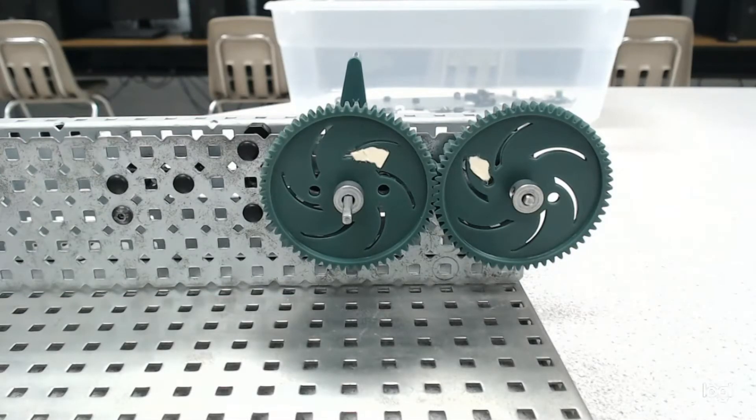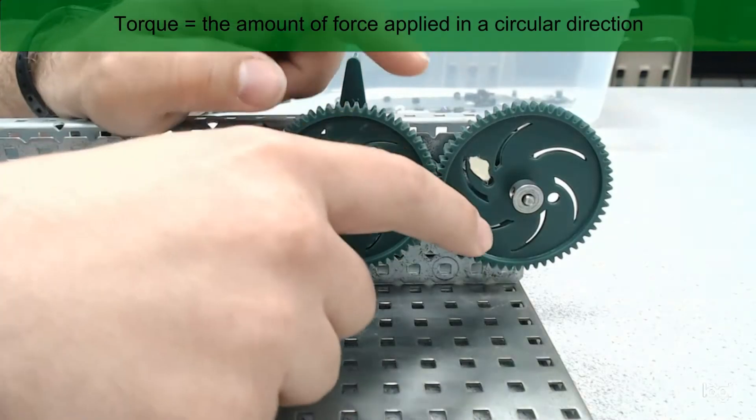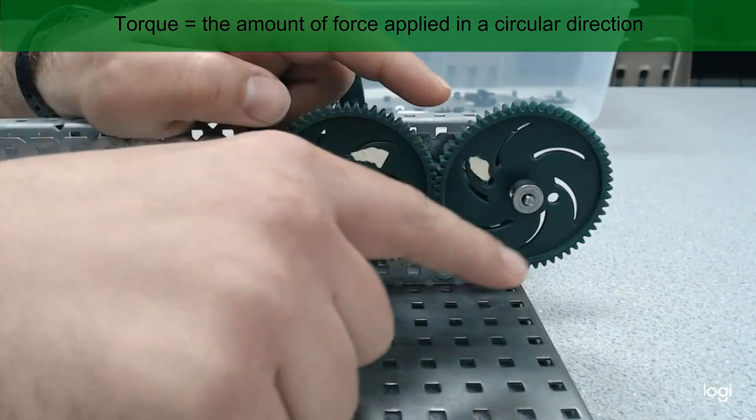Now gear ratio also helps us to figure out a relationship between speed and torque. So going back to science a little bit, speed is the amount of distance we cover in a given amount of time and torque is the amount of force applied in a circular direction.